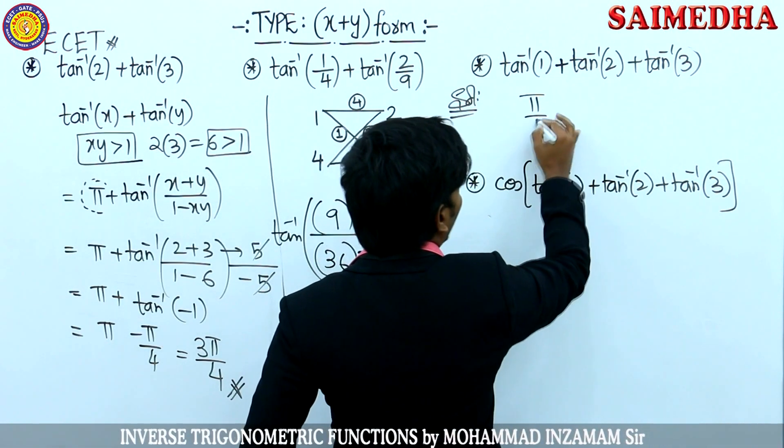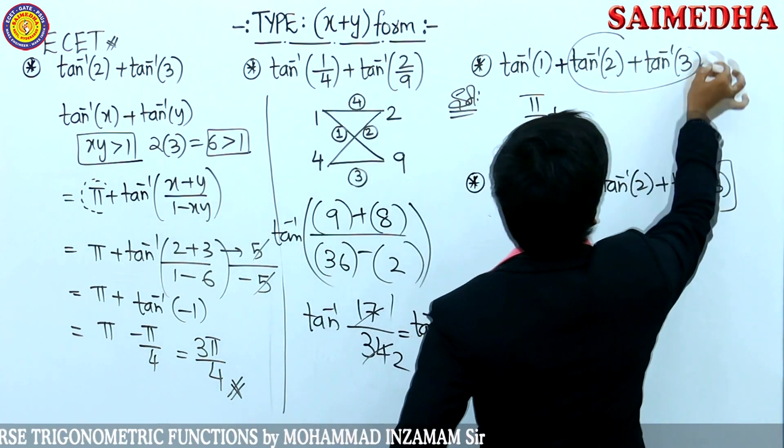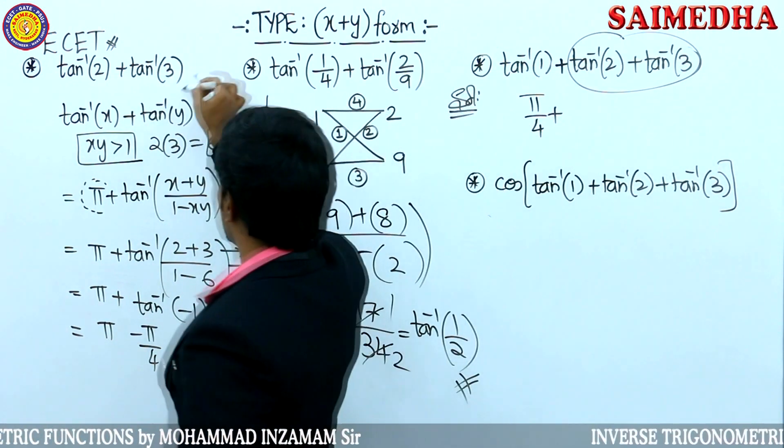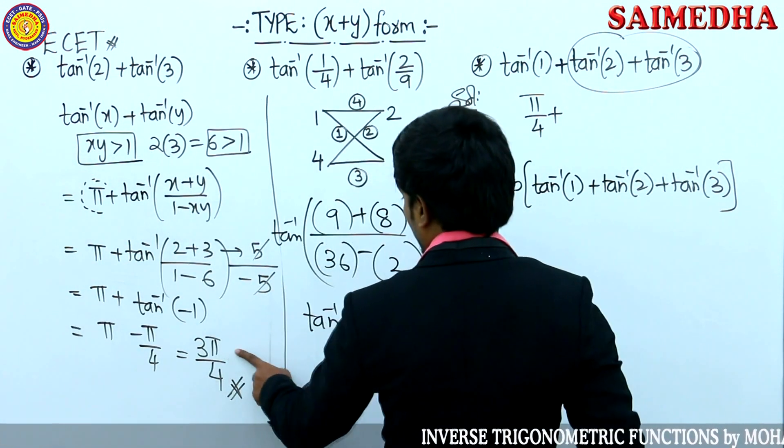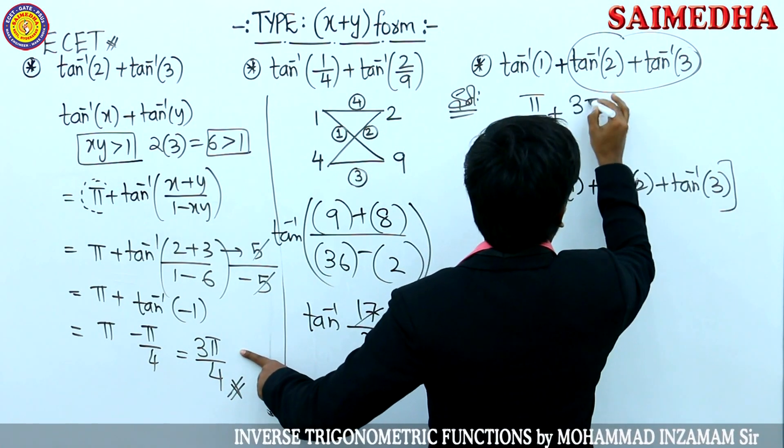Now see this. Tan inverse of 1 is pi by 4. Tan inverse of 2 plus tan inverse of 3, already solved here. Tan inverse of 2 plus tan inverse of 3, answer is 3 pi by 4. 3 pi by 4.